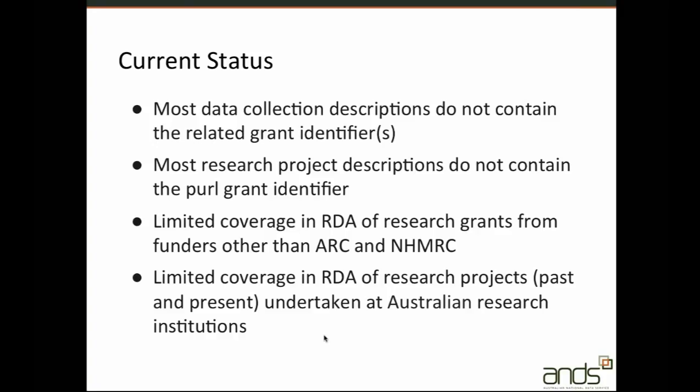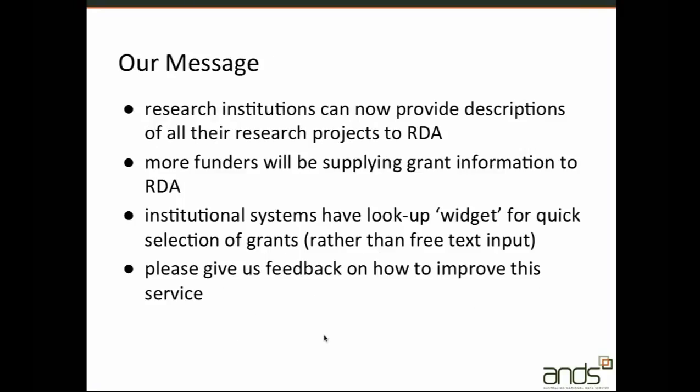Our message from this presentation and our continuing message is that research institutions can now provide us with descriptions of all of their research projects and we would like them to supply as much as possible. More funders will be supplying grant information to RDA. Institutional systems can have a lookup widget for quick selection and verification of grants and inclusion of the PIRL grant identifier rather than just free text input. And we would like as many people as possible to give us feedback on how we can improve this service.